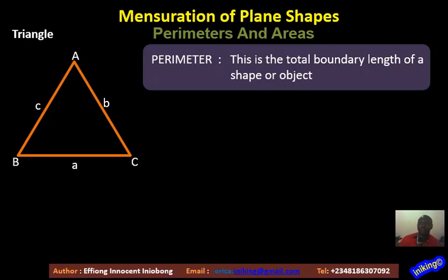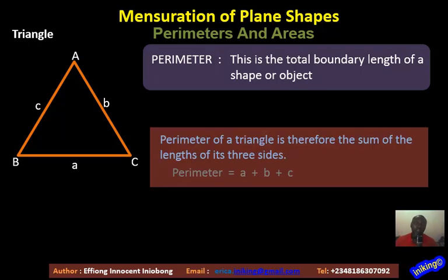So as I've just said, the perimeter of any plane shape is simply the total boundary length of that shape or object. And specifically for this triangle, that would mean the total of the length a, plus b, plus c as we have there. There's nothing so special about the perimeter of a triangle. Just add up the length of the three sides.